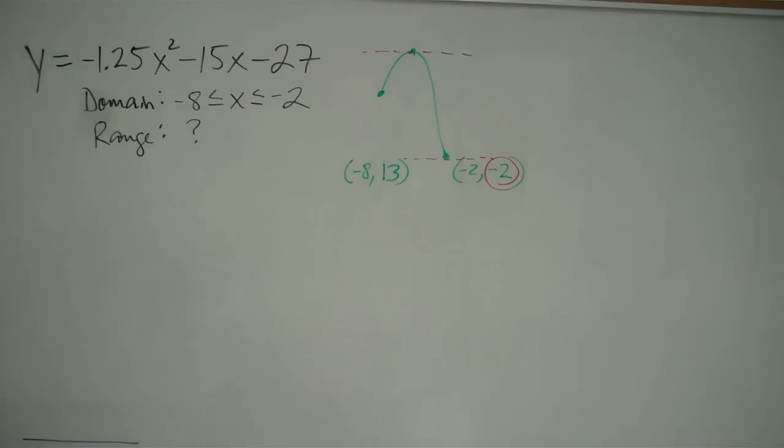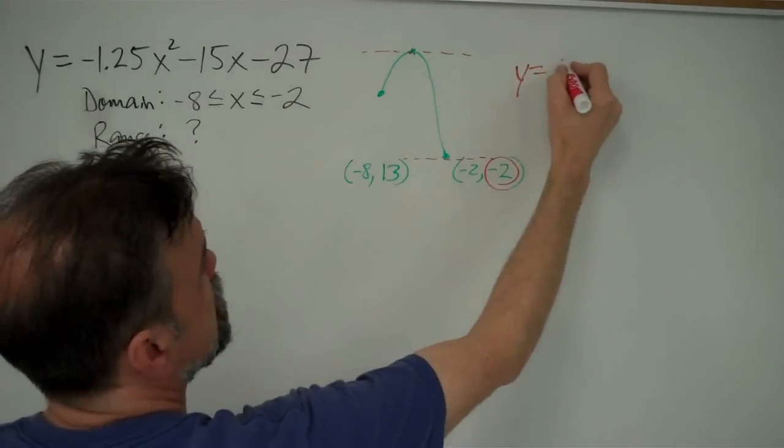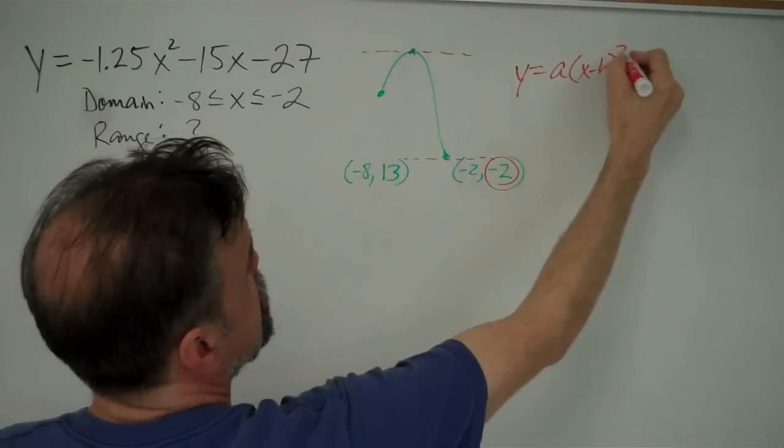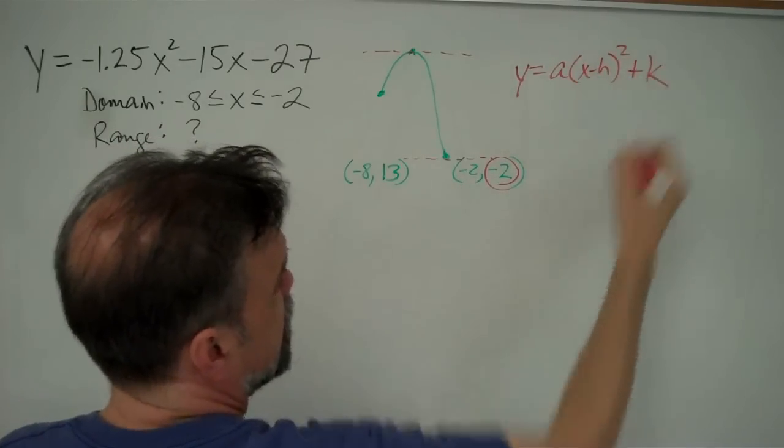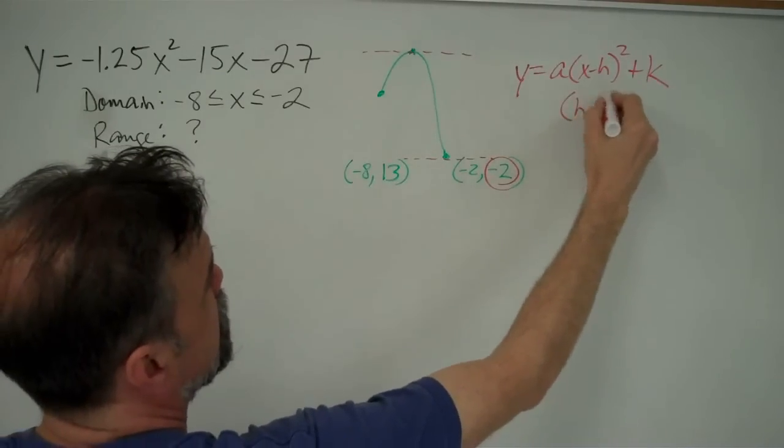Now, how does one find the vertex of this quadratic function? Well, one thing that we can do is we can put this in vertex form. And the way you get a function into vertex form is by completing the square. And by vertex form, what I'm talking about is y equals a times x minus h squared plus k. And the vertex of this is going to be the point h, k.